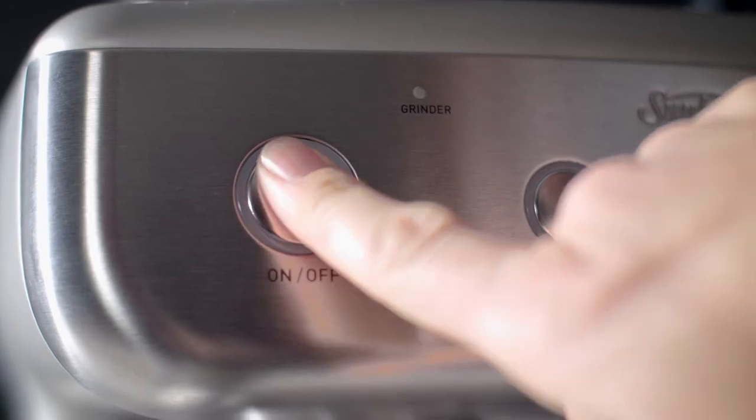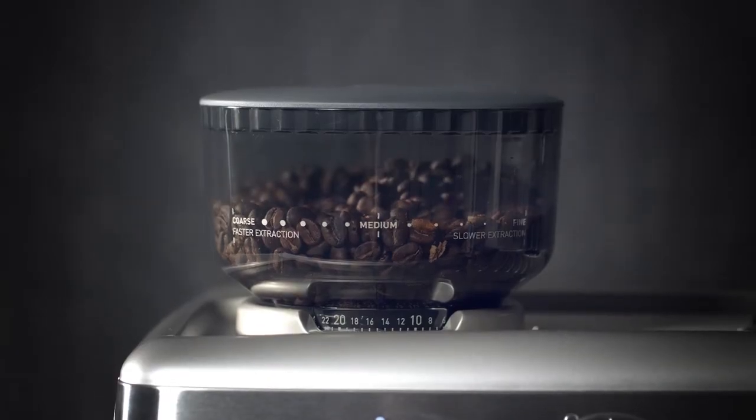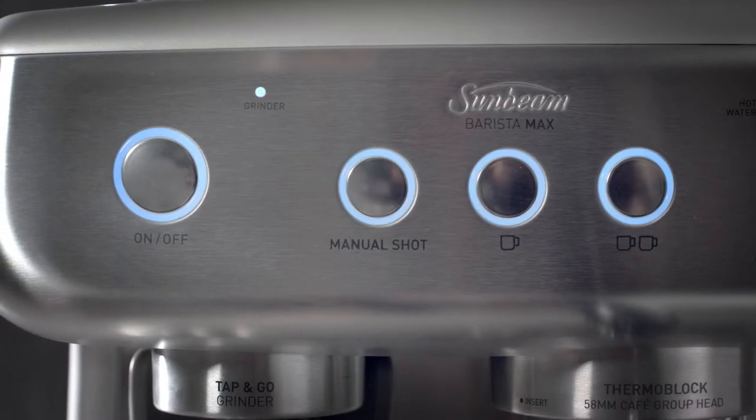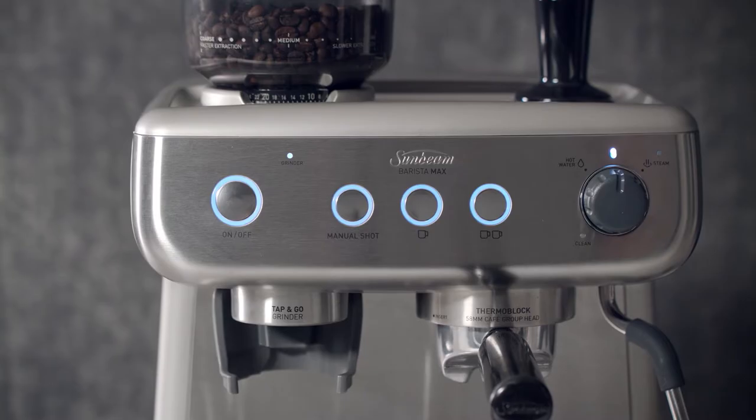Switch the Barista Max on. While the grinder will be ready to use straight away, the rest of the machine will take 60 seconds to heat up. Once all the lights are fully illuminated, your machine is ready to use.